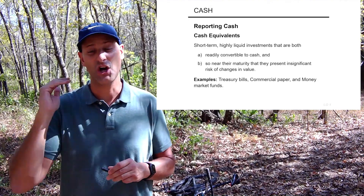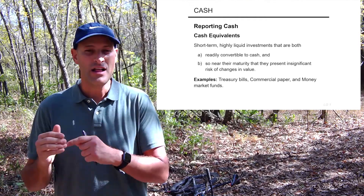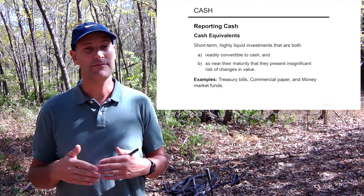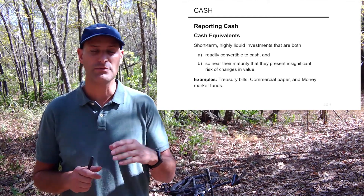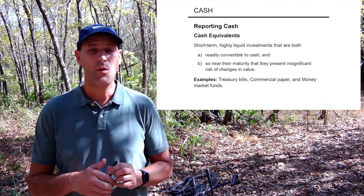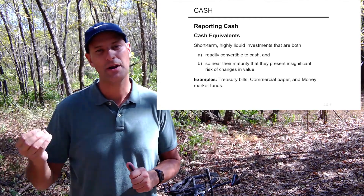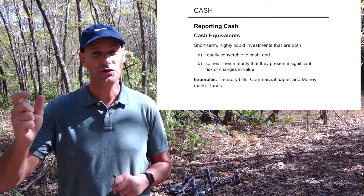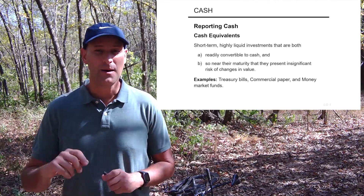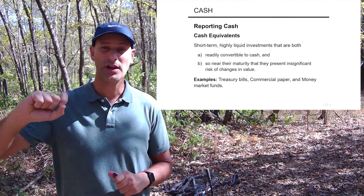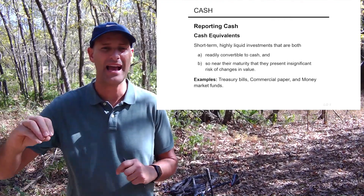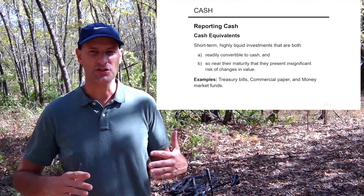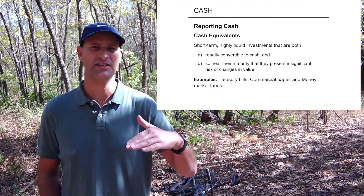Things have to convert to cash automatically within 90 days. This caused problems around the time of the financial crisis, where money market funds came under scrutiny because most companies reported them as cash equivalents. However, the financial instruments backing up a money market fund sometimes extended beyond a three-month maturity, introducing possible valuation risks. A lot of companies had to pull what they were calling cash equivalents — those money market funds — out of cash and report them as short-term investments. That's where things start to get a little squishy.